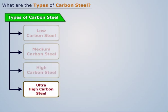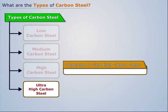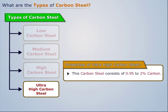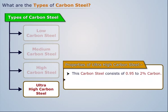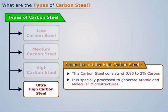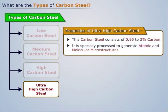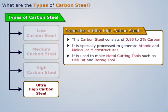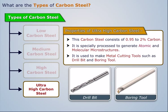Ultra high carbon steel consists of 0.95 to 2% carbon. It is specially processed to generate atomic and molecular microstructures. It is used to make metal cutting tools such as drill bits and boring tools.